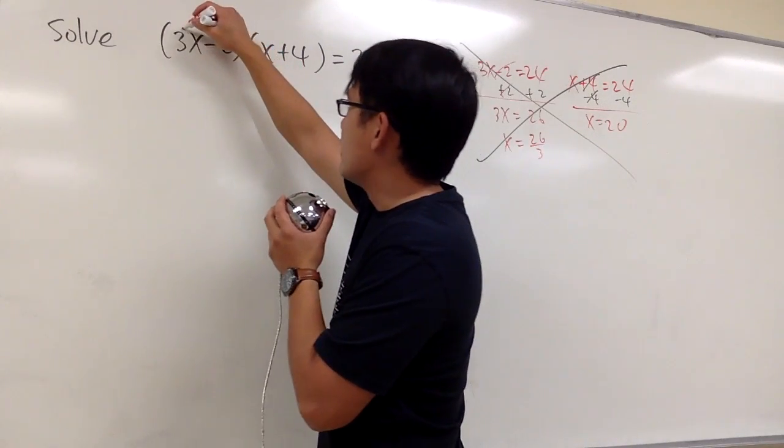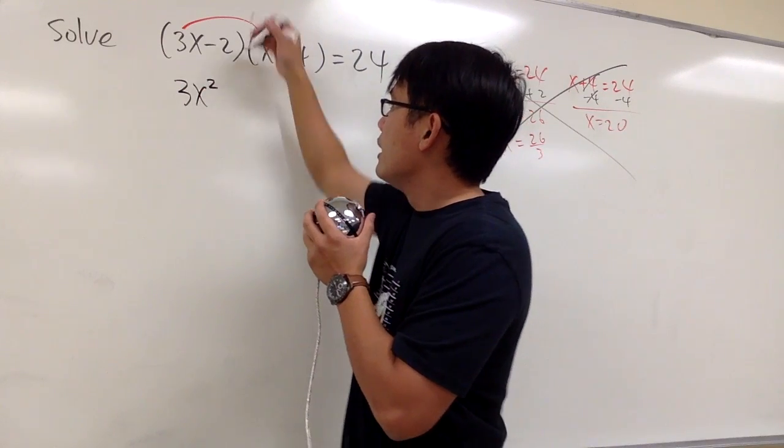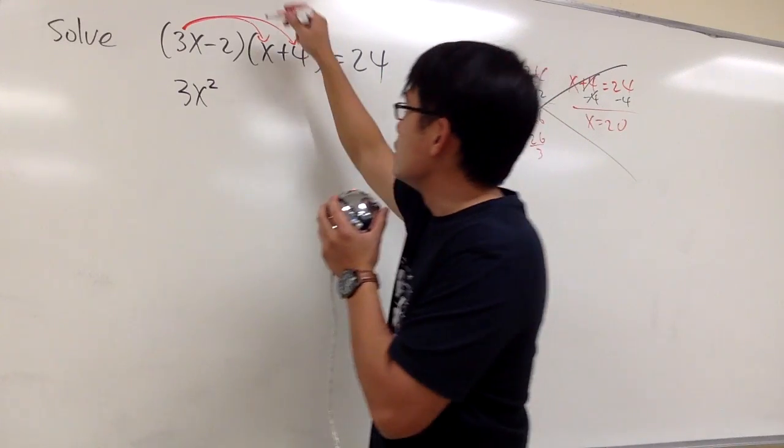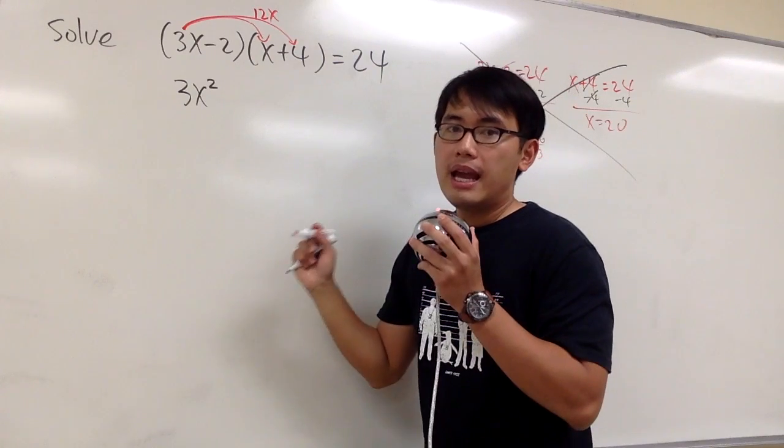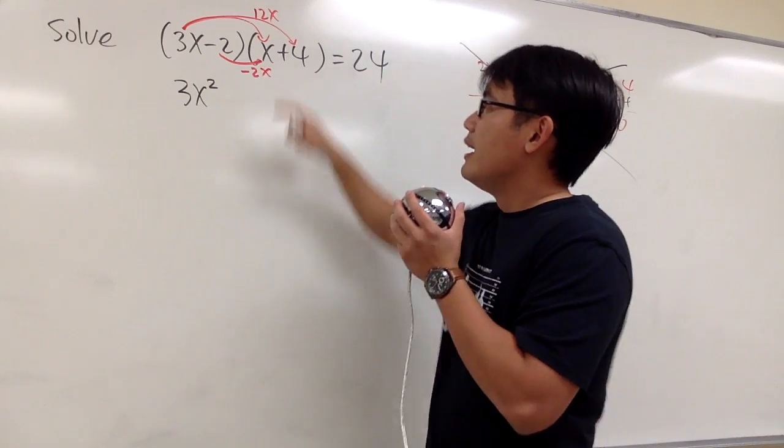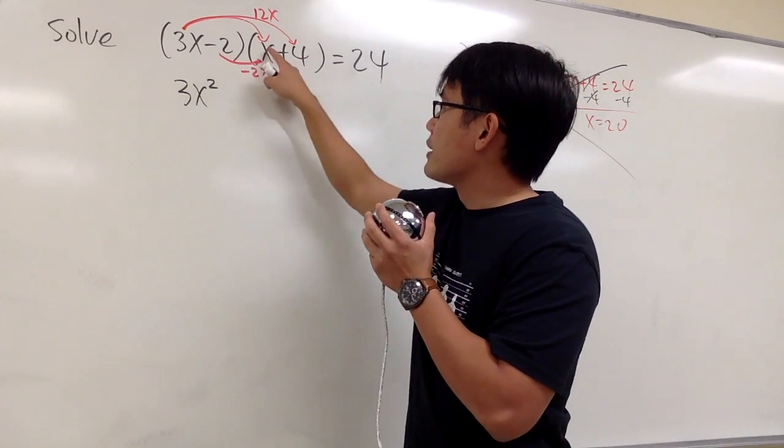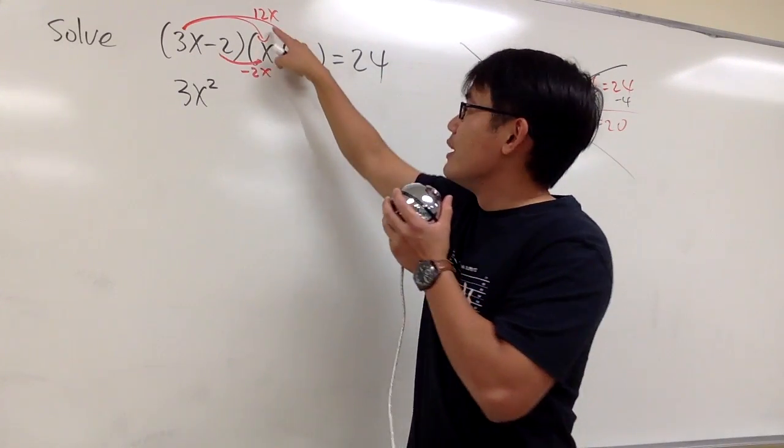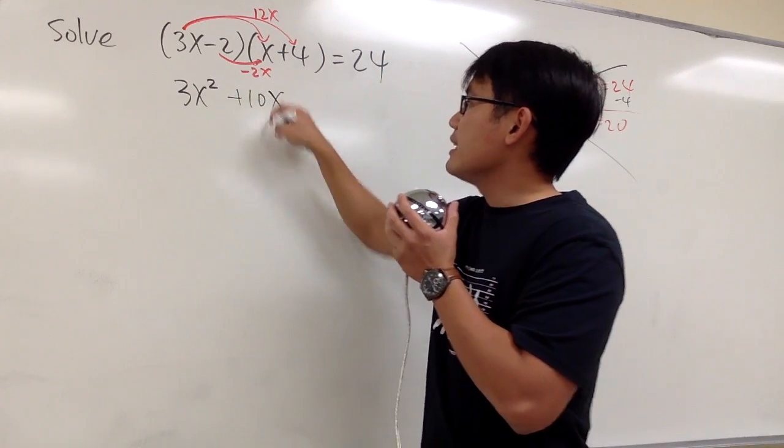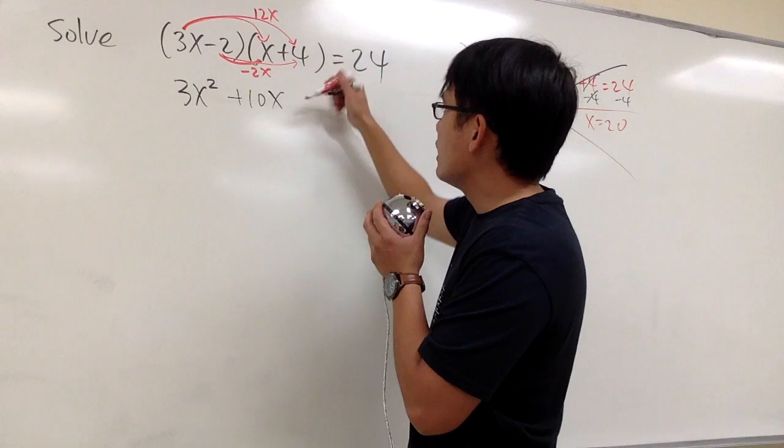So, let's go ahead and multiply this out. We have 3x times x, that's going to give us 3x squared, and then we take 3x times 4, that's 12x. And then we take negative 2 times x, that will be minus 2x. I put down the result above and below because we know the outer product and the inner product, we can combine like terms. So 12x minus 2x, that's plus 10x. At the end, we have negative 2 times positive 4, and that's minus 8.